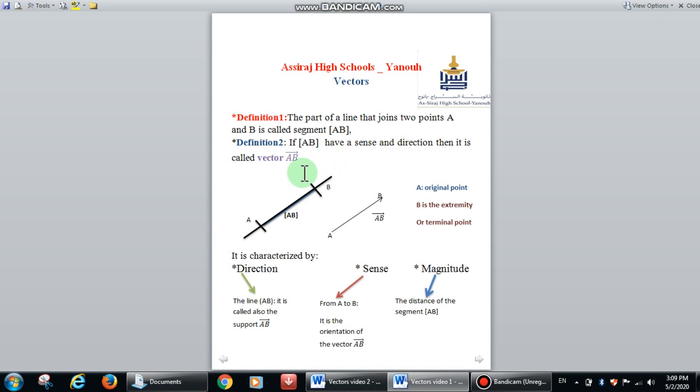Then we can name it as vector AB, with A the original point and B the ending point or the terminal point. And we can denote it by A, the beginning point, B the ending point, and don't forget the arrow. This is the vector AB.